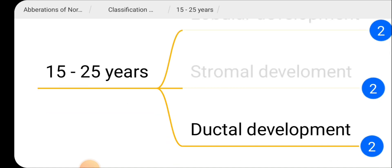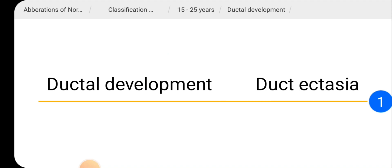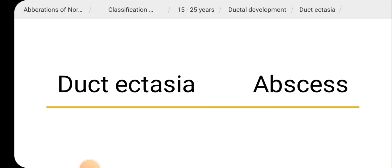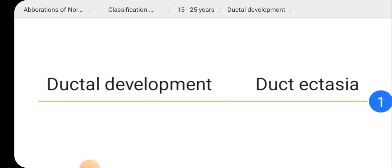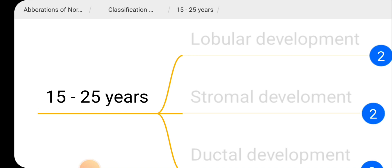Ductal development is also another form of development during this age group. Ductal development may give rise to the aberration duct ectasia, which is dilatation of the duct. Duct ectasia predisposes to abscess formation in the breast.